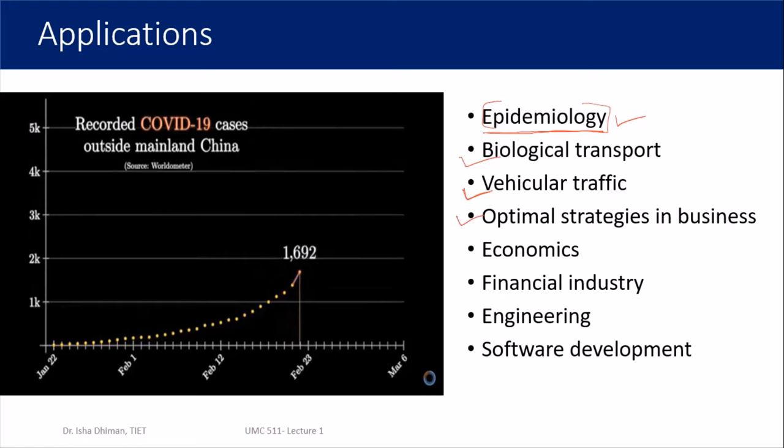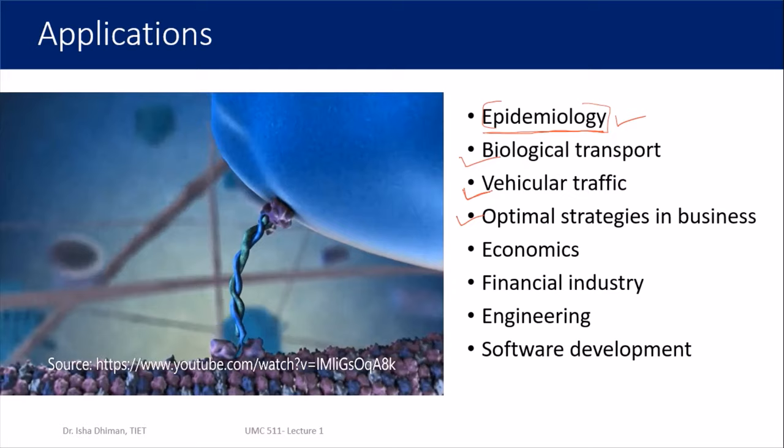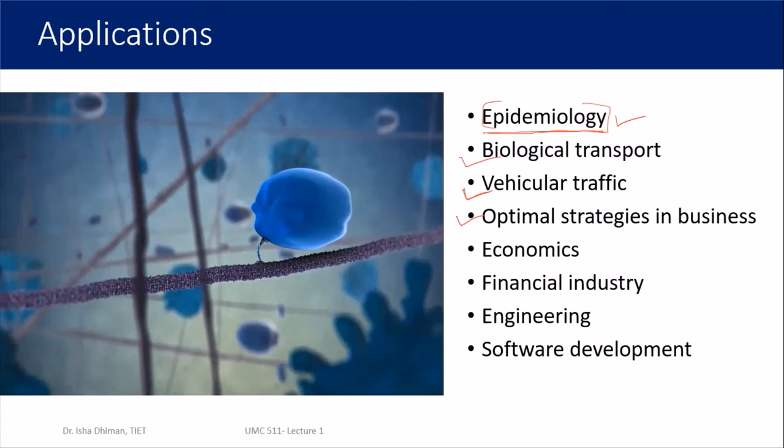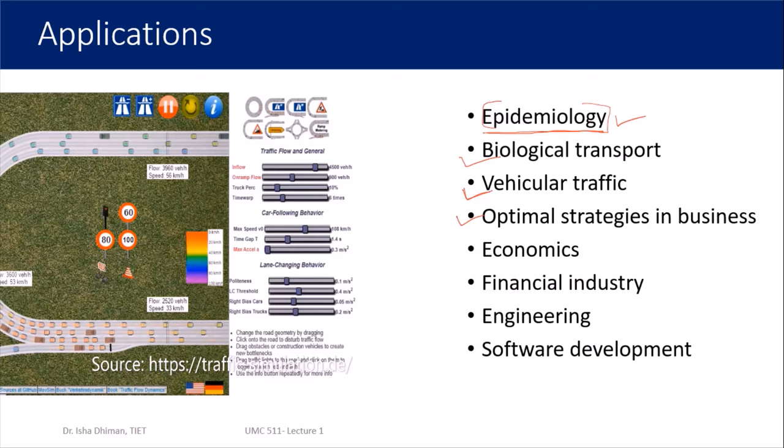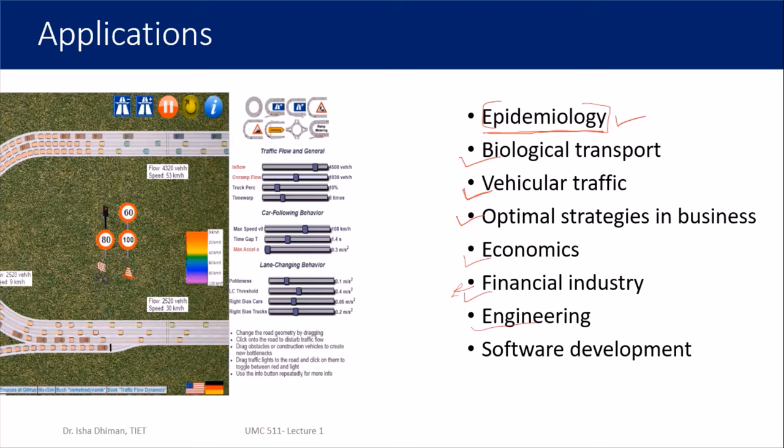In business, you want to optimally strategize — for example, in linear programming, you find an optimal solution, which is also a kind of mathematical model. Applications are also found in economics, the financial industry, engineering, and software development. These are just a very few applications of mathematical modeling. You can name any area and you will definitely find an application of mathematics and mathematical modeling there.